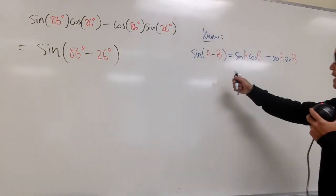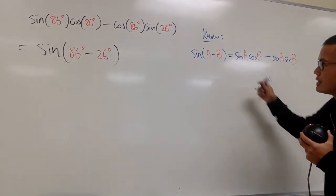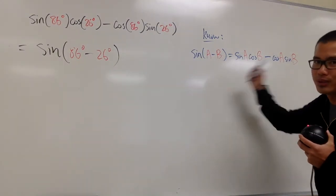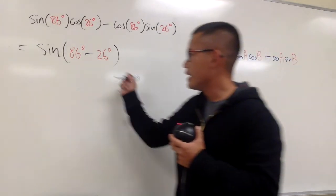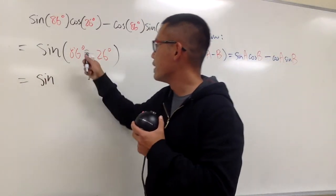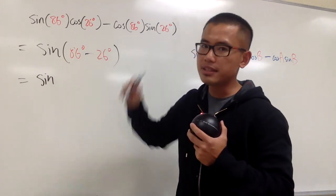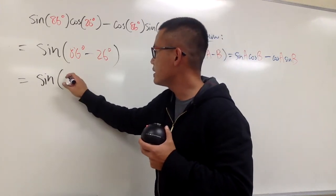Be sure, whenever you have an identity, you know how to work this out left and right, from right to left, and things like that. Back and forth. Anyway, you'll see this is just the same as sine of 86 degrees minus 26 degrees, which is 60 degrees.